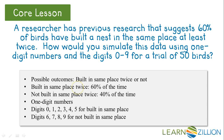We can use the digits 0, 1, 2, 3, 4, and 5 to represent a bird that builds a nest in the same place. We can use the digits 6, 7, 8, and 9 to represent a bird that does not build in the same place. Then we can use a random number generator to simulate the data.